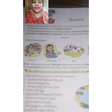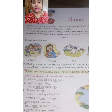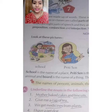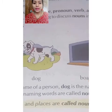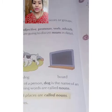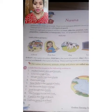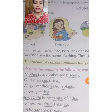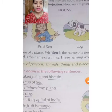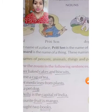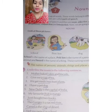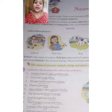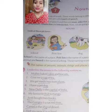First of all we will understand nouns. Noun is the name of a person, place, animal or a thing. You can see in the pictures — school is a place, teacher's name is a person, dog is an animal, and board is a thing. The name of persons, animals, things and places are called nouns. I hope you have understood — nouns kya hota hai, kisi ka bhi naam.